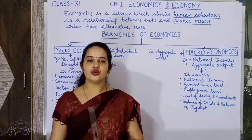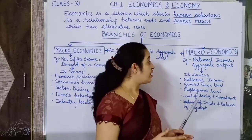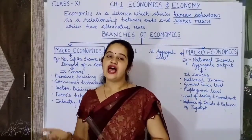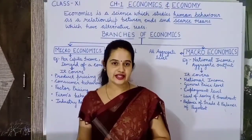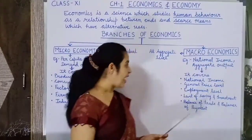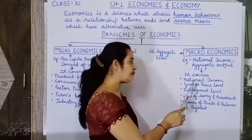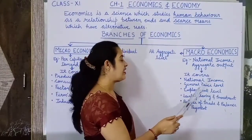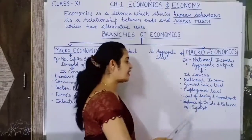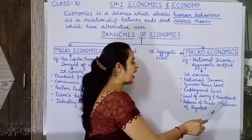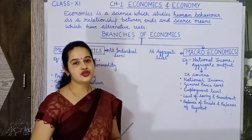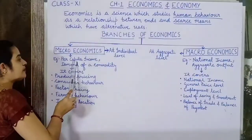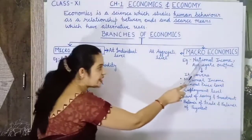Macroeconomics also analyzes the environment where firms, households, consumers, and governments take decisions. Macroeconomics covers national income, general price level, employment level, level of saving and investment, balance of trade, and balance of payment. The macro counterpart of per capita income is national income.